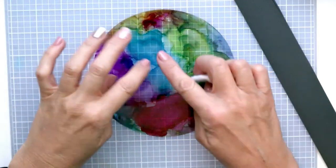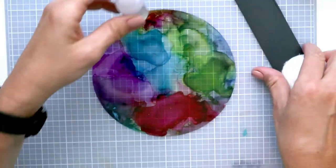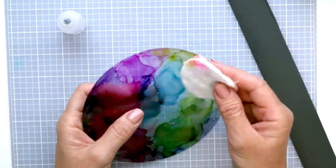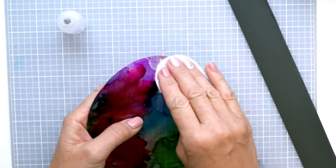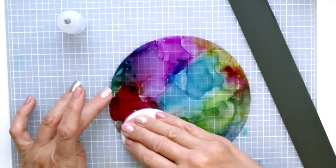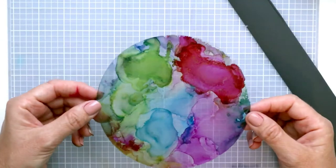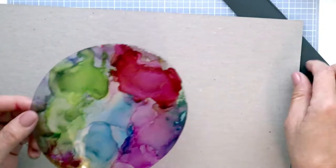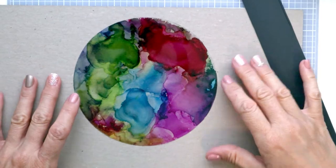The next step is to make sure that this part, which is where we're going to put the lead lines, is clean. So I'm just going to take some pad and wipe the back side to make sure that there isn't alcohol ink on this side. And once this is all clean and completely dry, you want to make sure that the alcohol is totally evaporated.